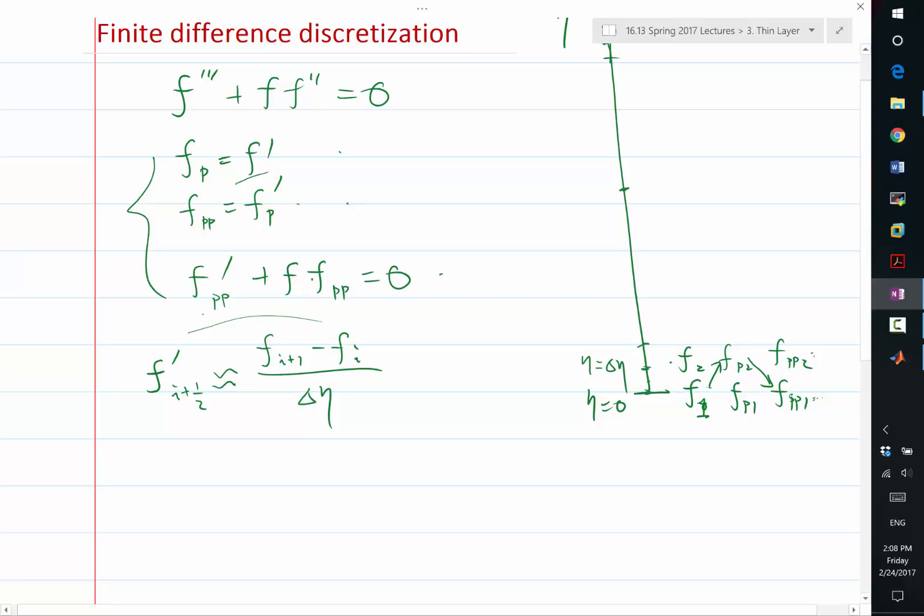And the problem is, I also need to approximate f prime at i plus half. So, the approximation is going to be also a second order central average. So, it's f prime i plus f prime i plus one over two, right? So, this kind of approximation is called the trapezoidal rule.